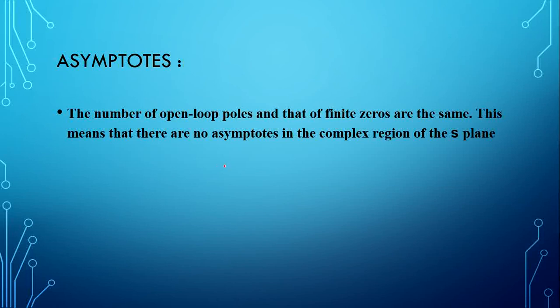Since P = Z, the denominator P−Z = 0, so centroid and asymptotic lines go to infinity — meaning there are no asymptotic lines in this example. We move to the next step.